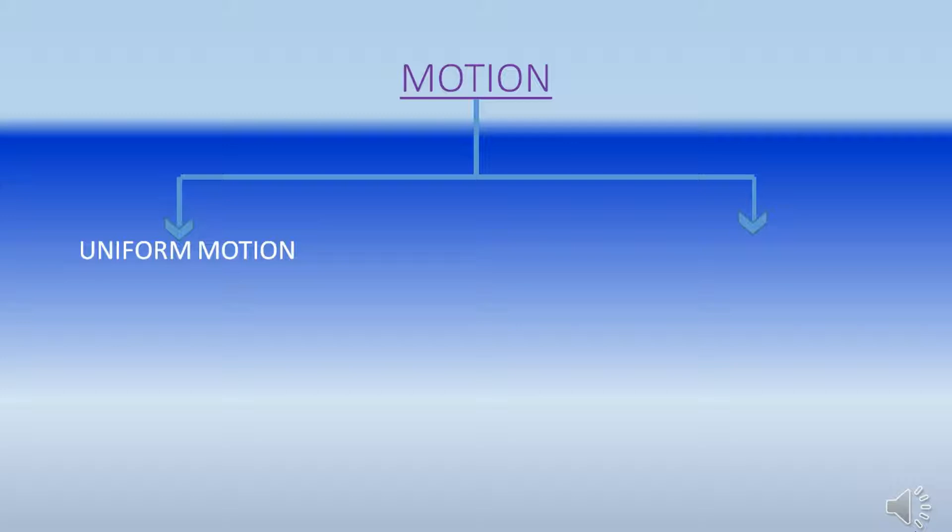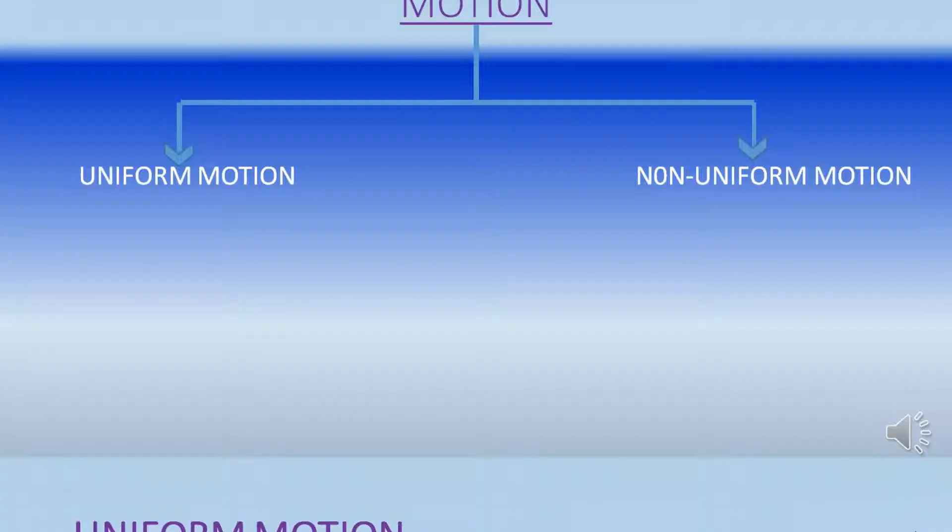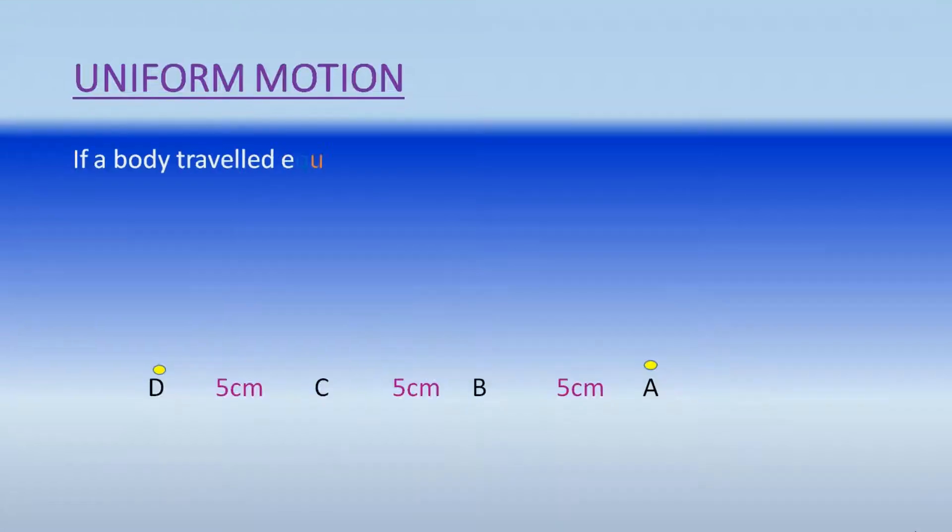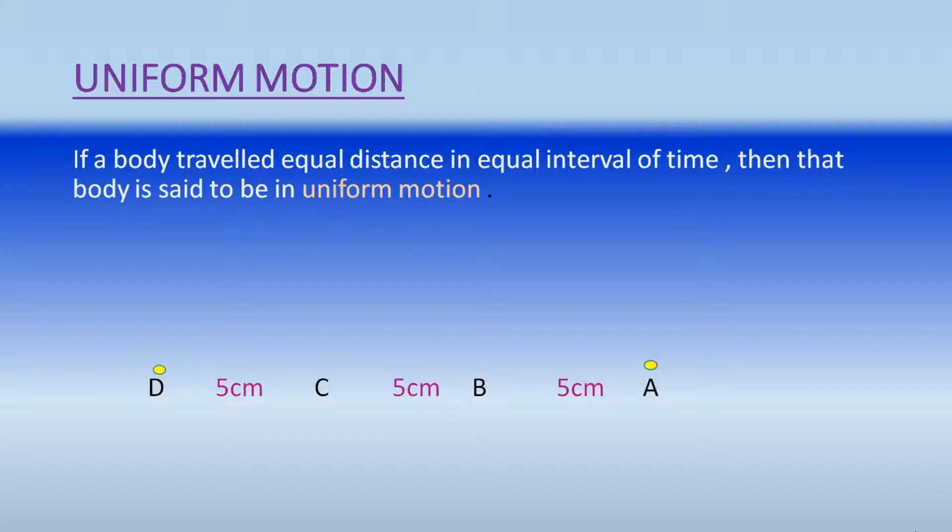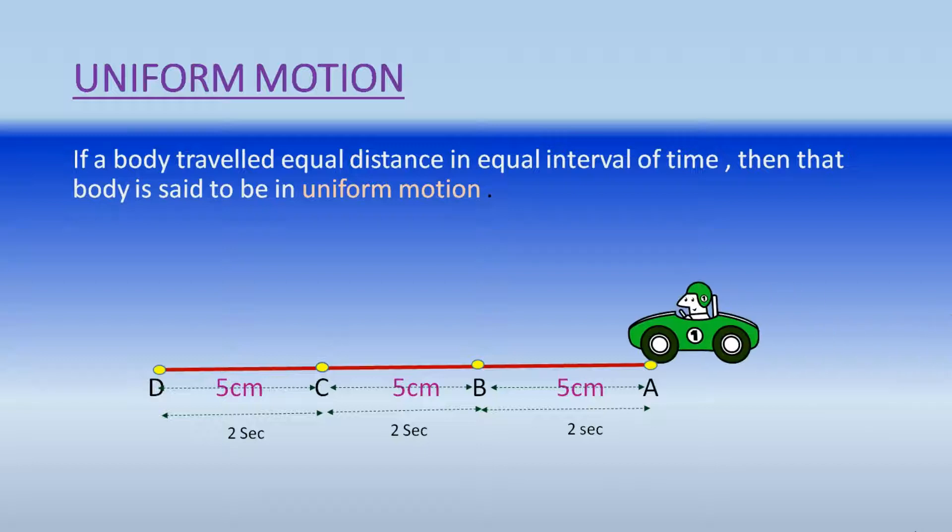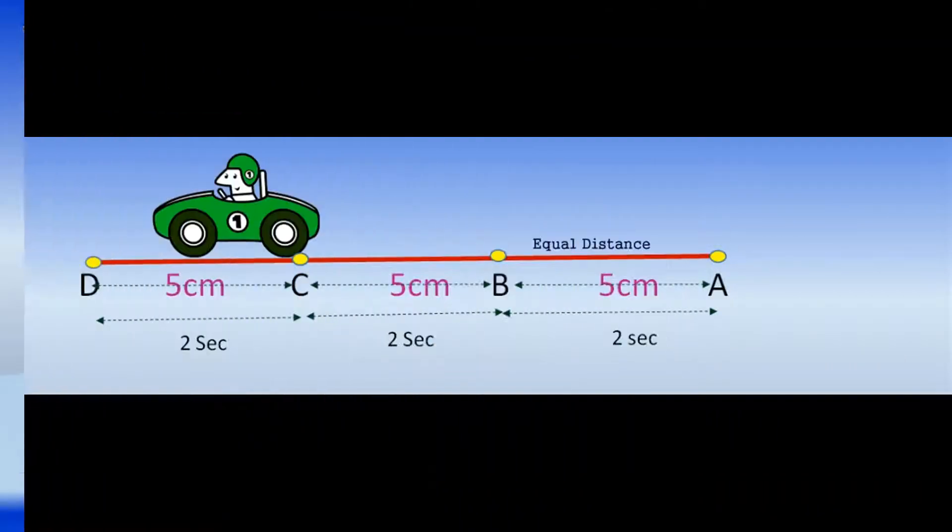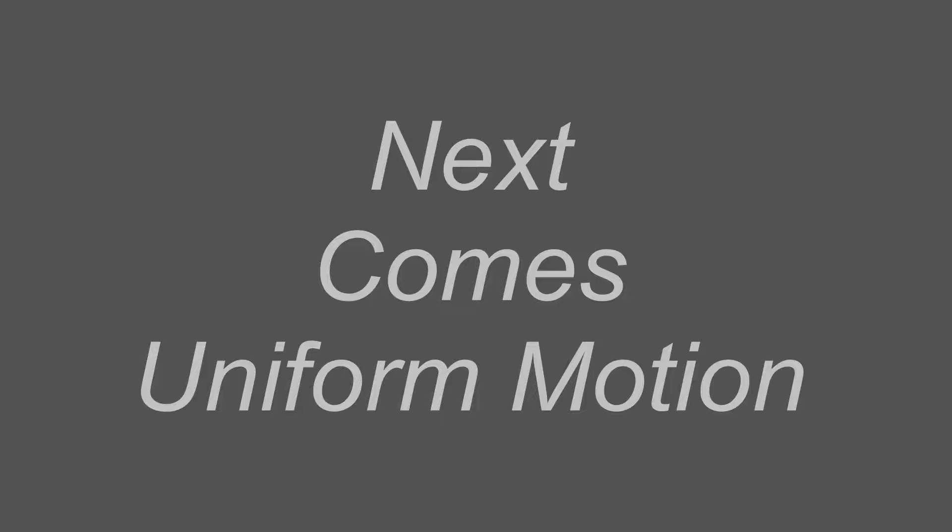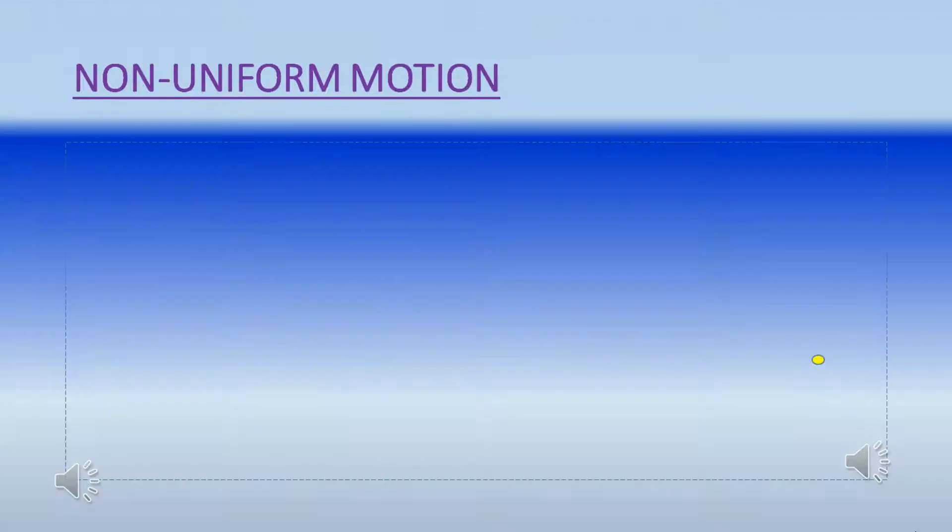What is uniform motion? If a body travels equal distance in equal period of time, then that body is said to be in uniform motion. As we watch here, a car covers equal distances, that means five centimeters, within equal interval of times of two seconds.